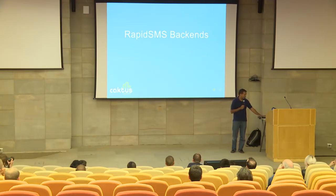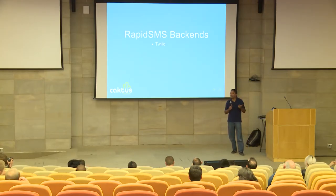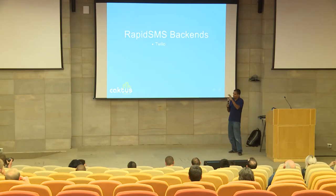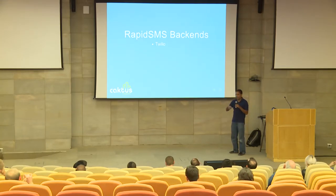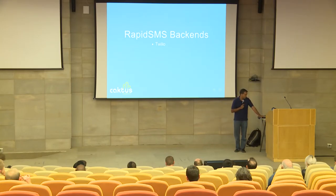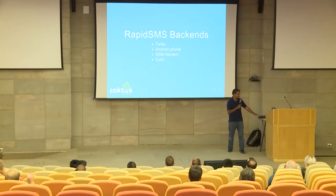RapidSMS back-ends are an important part — usually the hardest part of building an SMS application is figuring out how to connect to the phone system. An easy way, especially in testing, is Twilio — they have a bunch of phone numbers, you rent one, any messages that come into that number get HTTP-posted to your application, and when you send out messages you post to their URL and they send it out by the phone system. You can also use an Android phone as a cheap USB modem — not high performance but it can get things working. You can get GSM modems. And if you need highly available and scalable solutions, you can use things like Vumi.